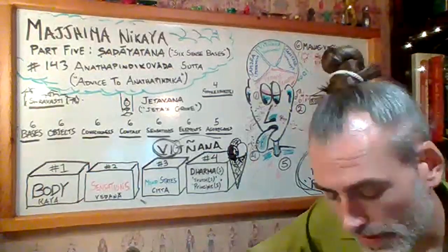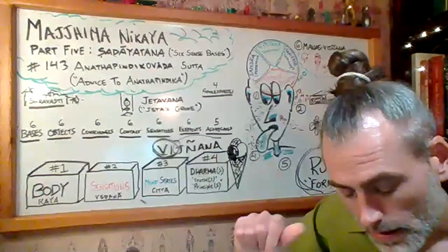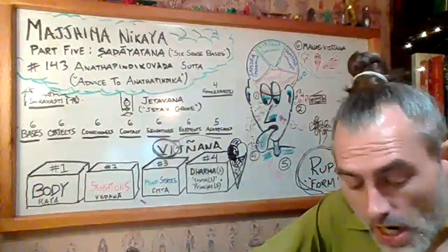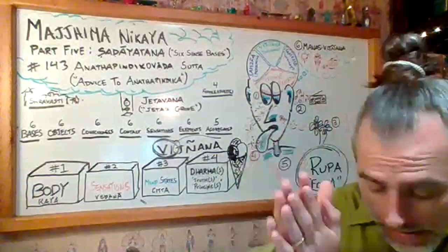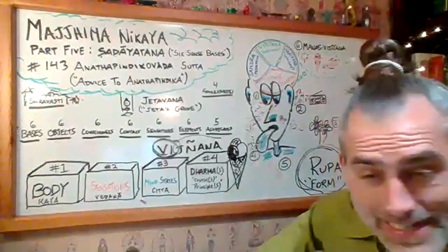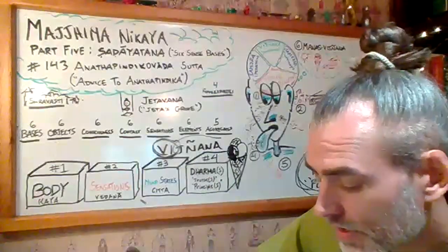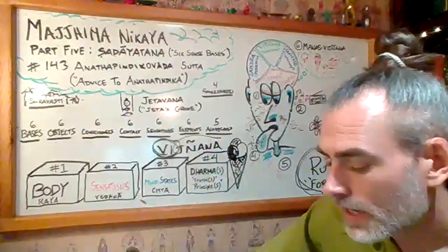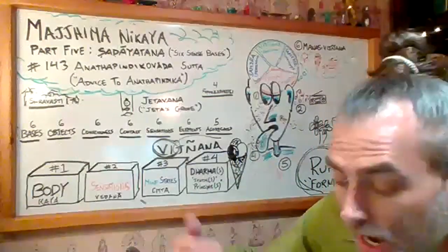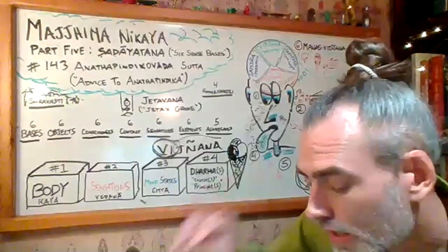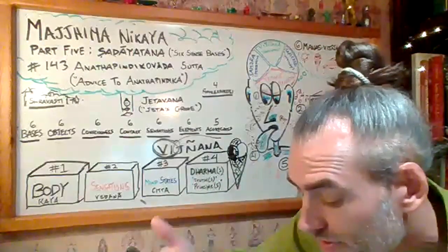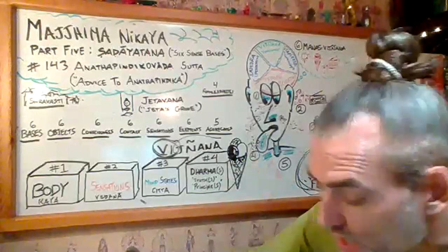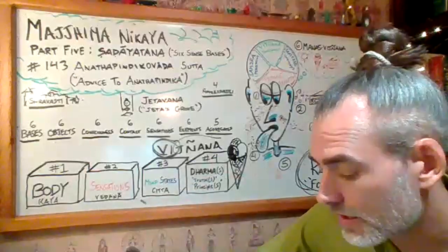'Householder, you should train thus: I will not cling to eye contact, ear contact, nose contact, tongue contact, body contact, or mind contact, and my consciousness will not be dependent on mind contact. Thus you should train. I will not cling to sensations born of eye contact, ear contact, nose contact, bodily contact, or mind contact, and my consciousness will not be dependent on sensations born of mind contact. Thus you should train.'